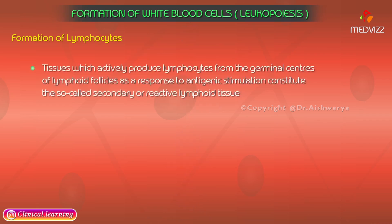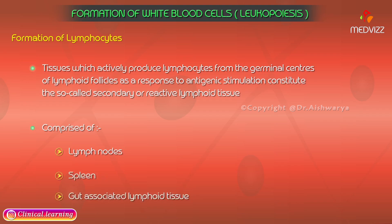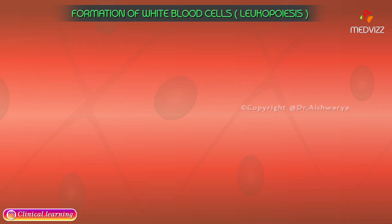Tissues that actively produce lymphocytes from the germinal centers of lymphoid follicles in response to antigenic stimulation constitute the secondary or reactive lymphoid tissue. This is comprised of the lymph nodes, spleen, and gut-associated lymphoid tissue.